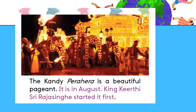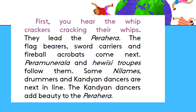It takes place in August. First, you hear the whipcrackers cracking their whips — they lead the perahera. The flag bearers, sword carriers, and fireball acrobats come next. Then the flag bearers, sword carriers, and heavy seat troops follow them.